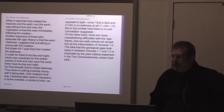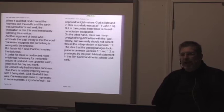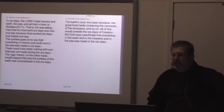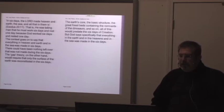On the other hand, there are many overwhelming difficulties with the gap theory, and we really should not accept this as the interpretation of Genesis 1:2. The idea that the geological ages took place in between 1:1 and 1:2 is precluded by the plain biblical statement in the Ten Commandments where God said, this is the answer, this is it, close your Bibles, close your notes. Everything is fully explained, and we know that there is no gap theory, because God said, in six days the Lord made heaven and earth, the sea, and all that is in them.